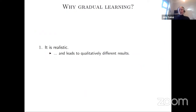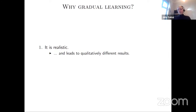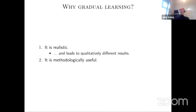Now that we know what we mean by gradual learning, the next natural question is: why should we care? First, we should care because it happens. I will show that gradual learning, relative to the instantaneous feedback model, will have qualitatively different results. There's also a second, technical reason: gradual learning is a useful methodological approach to study equilibrium behavior in experimentation models more widely.